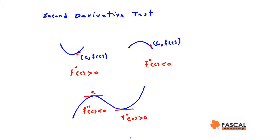If the function f is twice differentiable at x equals c, then the graph of f is concave upward at c if f double prime of c is greater than 0, and concave downward if f double prime of c is less than 0.